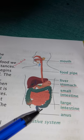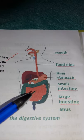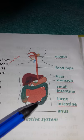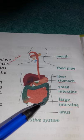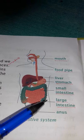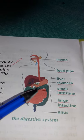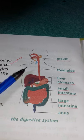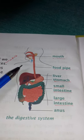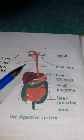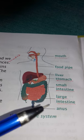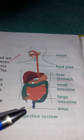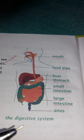In the large intestine, the water remaining in the undigested food is absorbed. The large intestine absorbs that water, and the undigested food comes out from our body as waste material through the anus.